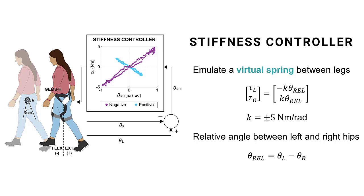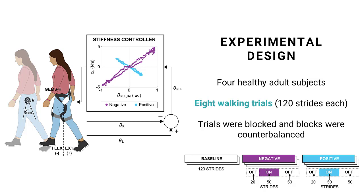As for the experiment itself, four healthy adults participated. Each participant performed a total of eight walking trials, and each trial consisted of 120 strides, overground in a long straight hallway with low foot traffic. In the first two baseline trials, participants walked with the exoskeleton on but it was not powered. In the remaining six trials, participants walked for 20 strides, then the robot was turned on for the next 50 strides, and then turned off for the remaining 50 strides. Participants performed three trials with negative stiffness applied and then another three with positive stiffness applied. These trials were performed in a blocked manner, and the blocks were counterbalanced.